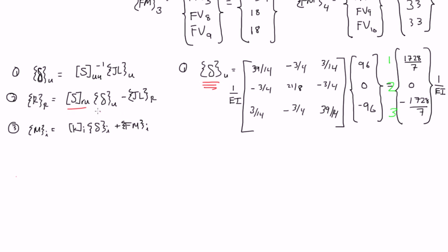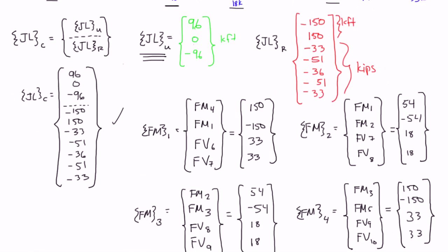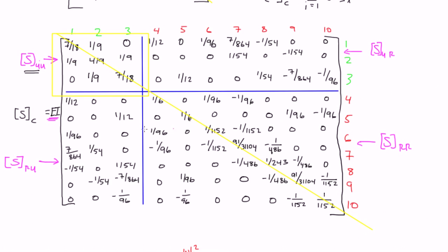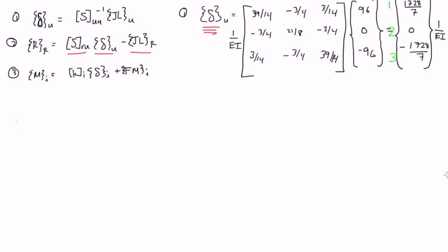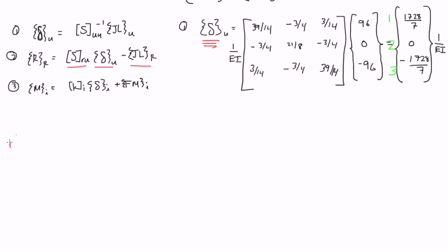And for that, we need our S sub RU matrix, our delta sub U matrix, and our joint load restrained matrix. Now, our S sub RU matrix comes from this big S sub C matrix. Remember, our S sub RU matrix is this 7 by 3 matrix here, in the bottom left quadrant. So I'm going to zoom down just a bit. For our restrained reactions, and remember this is a column vector, we need our S sub RU matrix. And our S sub RU matrix, I'm going to write really quick, is 1 over 12.